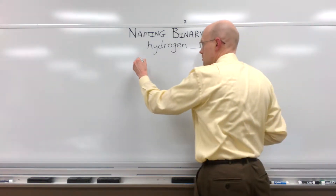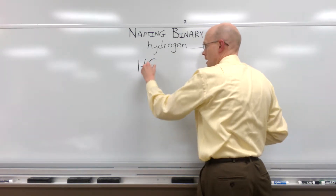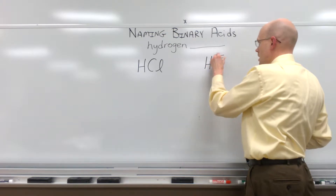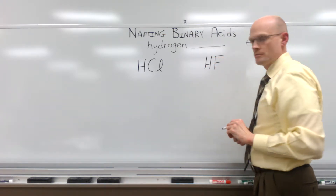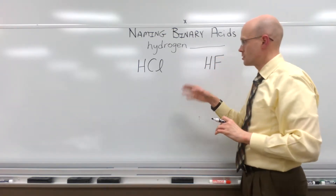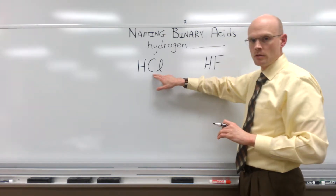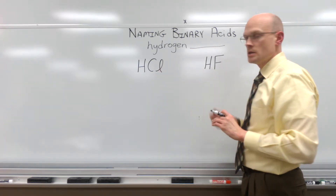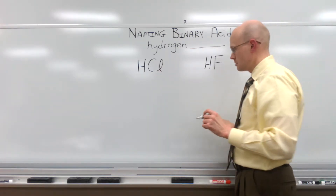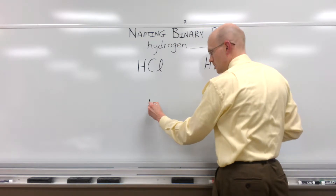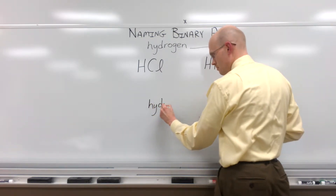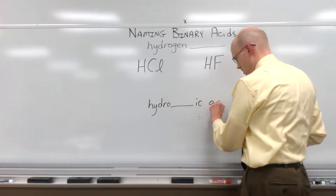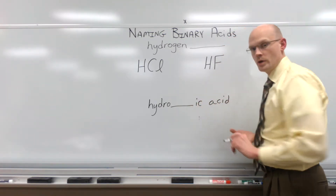Here are some examples: HCl and HF — binary acids. See the hydrogen followed by a nonmetal element. To name binary acids, there is a template. The template is hydro-[blank]-ic acid when we get ready to name these.